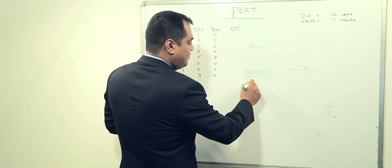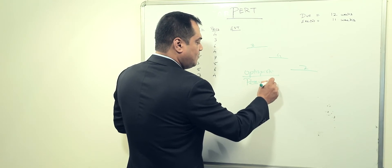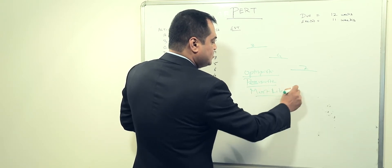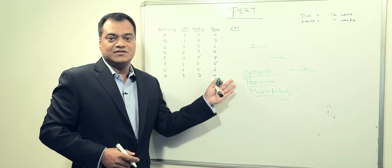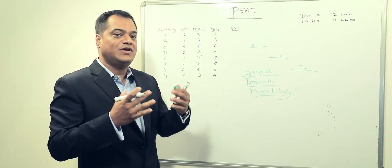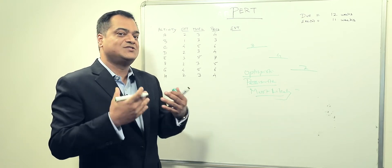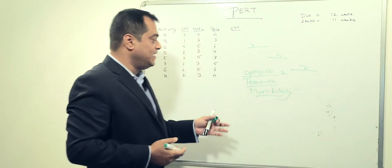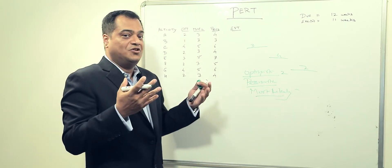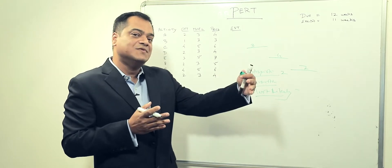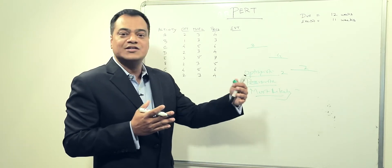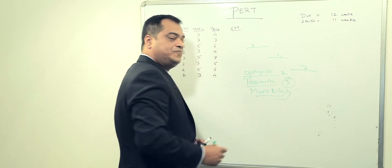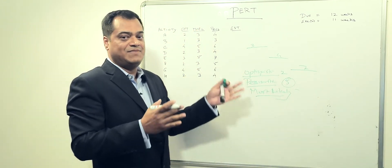Optimistic is something we think we can do in a much shorter time, so we come up with a small number. For example, we think we can do this job in two days, so we put two for optimistic. Pessimistic is the maximum time we may be working on a particular task — let's say pessimistic is five days.